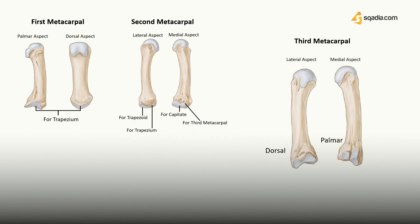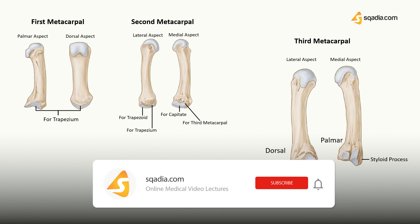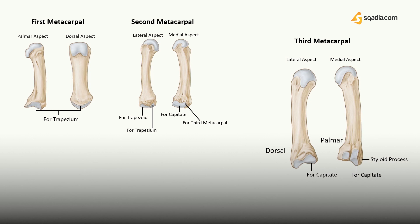The third metacarpal bone is located at the base of the middle finger. Its distinguishing feature is a styloid process that projects proximally from the lateral dorsal edge of its base, providing articulation with the capitate bone. There are four surfaces of the base: the lateral surface articulates with the second metacarpal, and the medial surface articulates with the fourth metacarpal via two oval articular surfaces. The palmar surface of the base provides insertion to the flexor carpi radialis muscle, whereas the extensor carpi radialis brevis inserts to its dorsal surface.